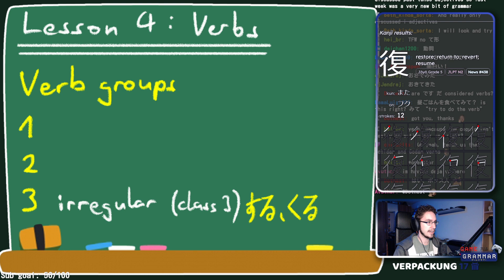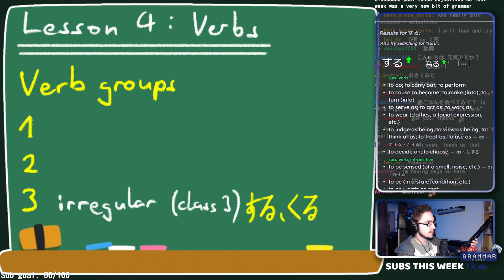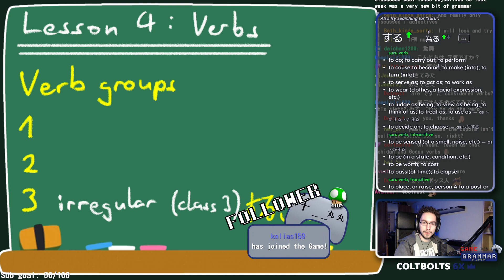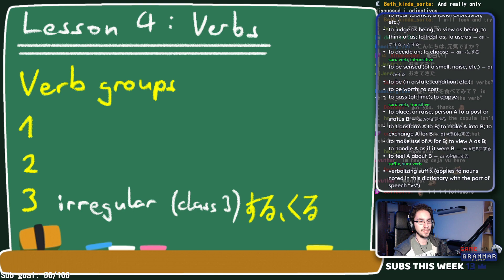What do suru and kuru mean? Suru means 'to do' — it's a very versatile verb, but remembering it as 'to do' is a good start. It has many other meanings that fall into similar categories and has to do with phrasing as well.